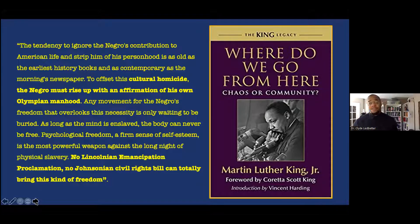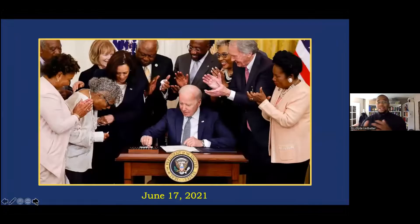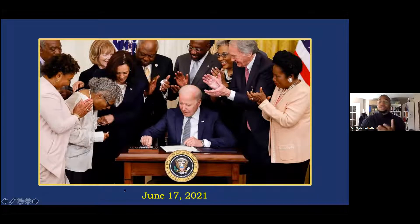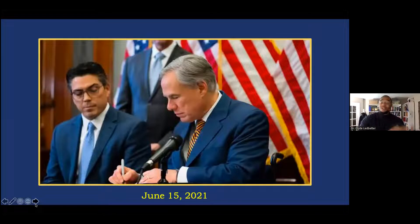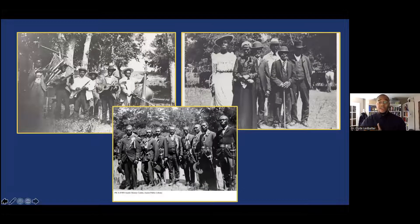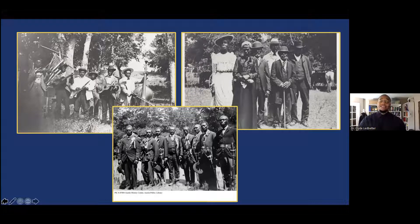As we talk about Juneteenth today, we need to remember King's words — especially now in 2022. Although last year President Biden signed the legislation to make Juneteenth a federal holiday on June 17th, two days earlier in Texas — the home of Juneteenth — Juneteenth started in Texas in 1866. For a brief overview: Juneteenth was the day, June 19th, 1865, that General Granger of the Union Army came into Galveston, Texas and alerted the enslaved people that slavery was over in Texas.